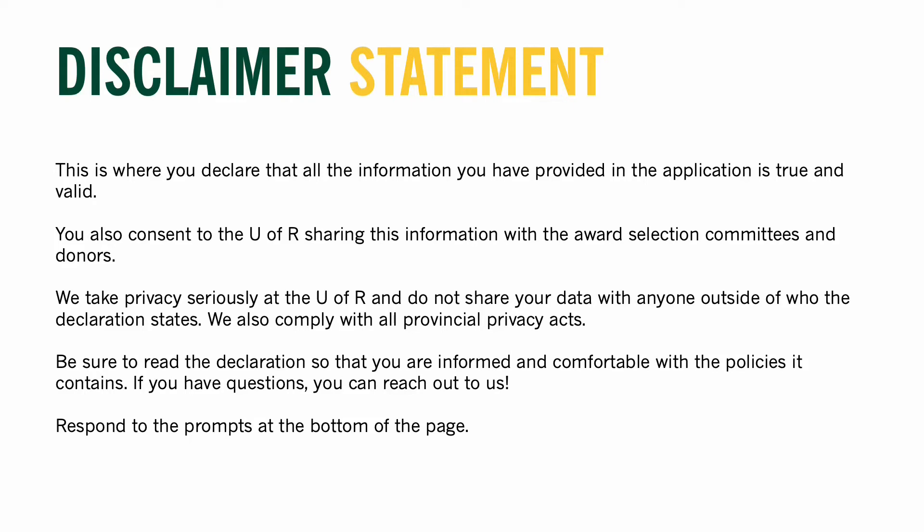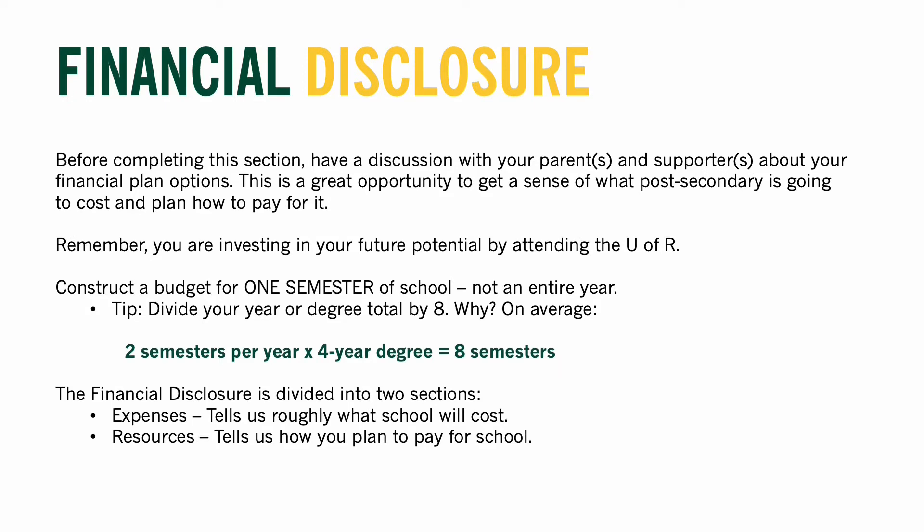The next section that could appear is Financial Disclosure. I recommend completing this section after discussing your educational funding plan with your parents or supporters, to get a sense of whether they have savings, RESPs, or other funding options available. For example, my parents were not able to pay for my education, so with their help I looked into other options including a student loan and a student line of credit. Having this conversation in advance will give you a better understanding of your personal financial plans and needs.